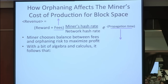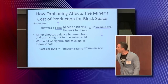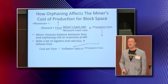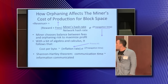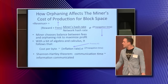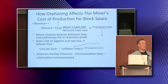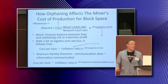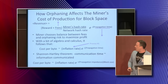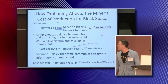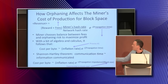With a bit of algebra and calculus, it follows from that equation that the cost per byte for the miner to produce block space is proportional to Bitcoin's inflation rate times a term that grows exponentially in the propagation time. This is exciting because we're showing there's a real cost to produce block space. But it brings up proviso number one: if the inflation rate is zero when the block reward runs out, it's not clear what happens to the production costs. Using the Shannon-Hartley theorem from physics — which says that the time to communicate some amount of information is proportional to the amount of information communicated — we can write the cost per byte in terms of the propagation impedance times the block size, where propagation impedance is how many seconds it takes to communicate a megabyte of block information. This shows that the cost grows exponentially in the block size.